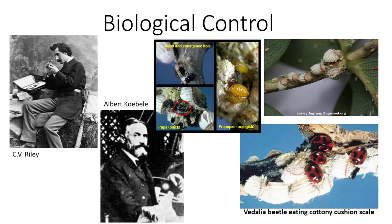The beetle was extremely easy to establish at new locations. For example, only four adults were taken to Peru and successful populations developed. There was fantastic control of the scale until DDT was used in orchards in the late 1940s, which killed the natural enemies. Although the fly parasitoid was mostly forgotten, both agents are still established in California controlling the scale.